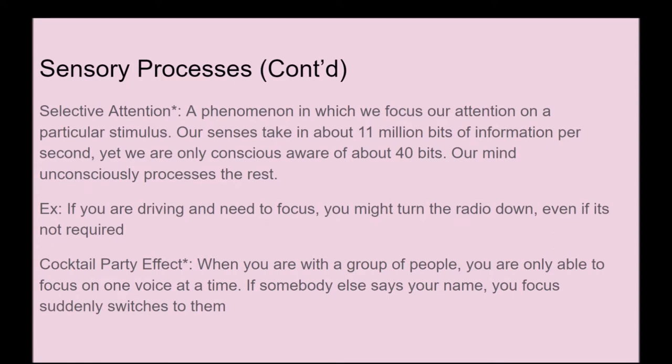There's also selective attention, which is a phenomenon in which we focus our attention on a particular stimulus. Our senses take in about 11 million bits of information per second, yet we are only consciously aware of 40 bits — our mind unconsciously processes the rest. For example, if you're driving and trying to find an address, you might turn the radio down to reduce the amount of stimuli you take in. Related to this is the cocktail party effect: when you're with a group of people, you can only focus on one voice at a time, but if somebody says your name, your focus suddenly switches to them.